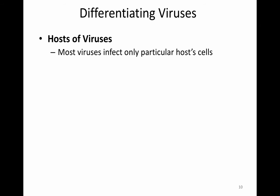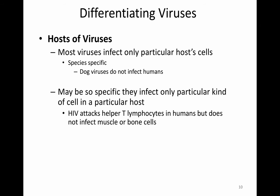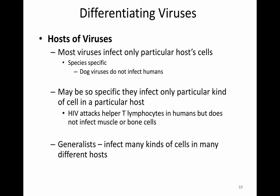We can also differentiate viruses based on their host. Basically, if you are a cell — bacteria, fungi, animal, or plant — you can be infected by a virus. Most viruses infect only one particular type of host cell, so they're species-specific. A dog virus does not infect a human, for example. They may be so specific that they infect only a particular kind of cell in a host — for example, HIV attacking T lymphocytes in humans but not other cell types. Generalists infect many kinds of cells in different hosts, crossing species barriers — a good example would be rabies, which can infect humans, dogs, skunks, raccoons, and bats.